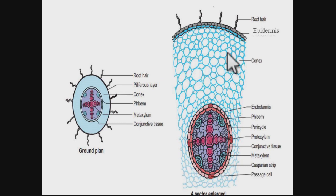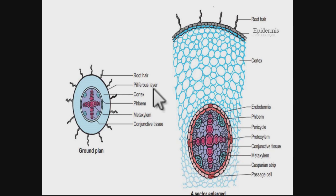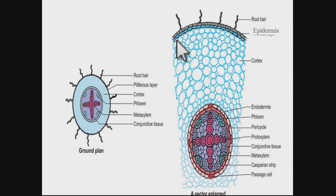The outermost cortical cells which do the function of epidermis are called the piliferous layer. This is also called epibelema or rhizodermis. When the epidermis ruptures and shuts off, the cortical cells perform the function of the epidermis, and these external cortical cells are then called the piliferous layer or rhizodermis.